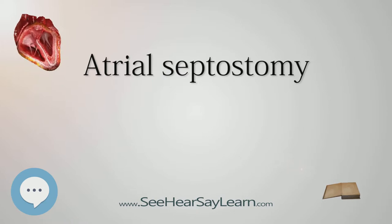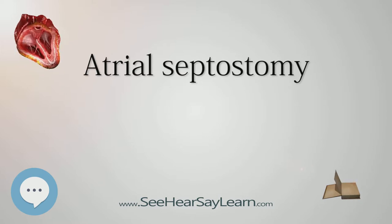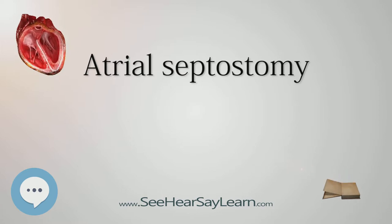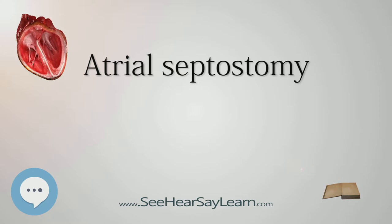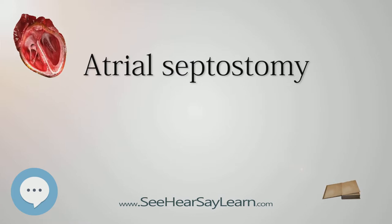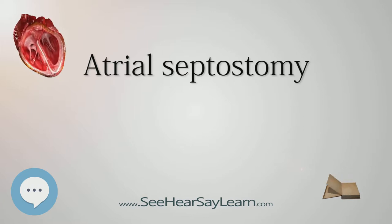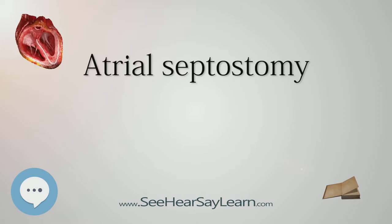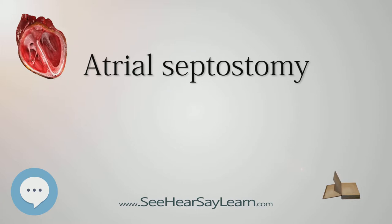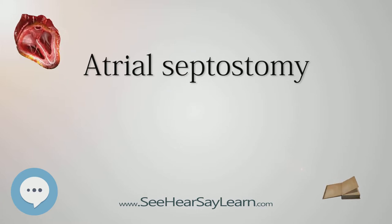Atrial septostomy allows more of the oxygen-rich blood to circulate throughout the body. The procedure is a temporary measure meant to help the patient survive until further corrective surgery can be done. In the separate case of pulmonary hypertension, abnormally high blood pressure in the blood vessels within and connected to the lungs puts stress on the right side of the heart, potentially leading to right heart failure. Atrial septostomy relieves some of this pressure, but at the cost of lower oxygen levels in the blood — hypoxia. As with DTGA, this surgery is not a definitive solution.